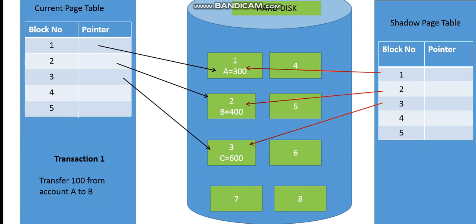Whenever any transaction is about to begin, a copy of the current page table is maintained. That copy is referred to as the shadow page table. It is exactly the same as the current page table, having block numbers and pointers pointing to the same blocks where the current page table is pointing.